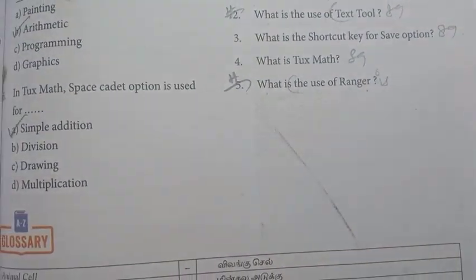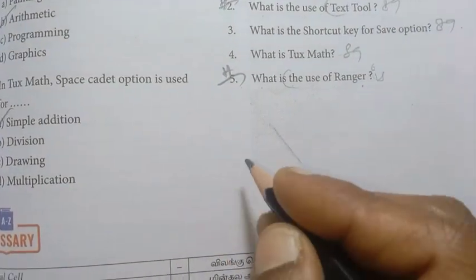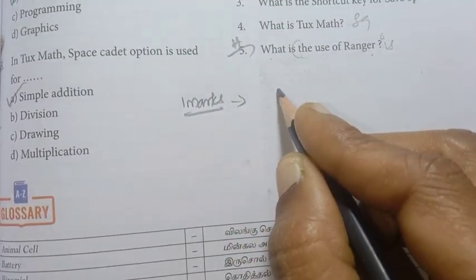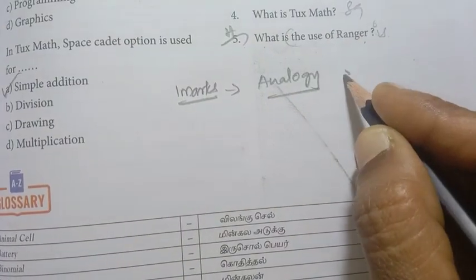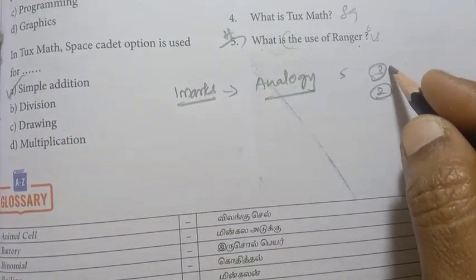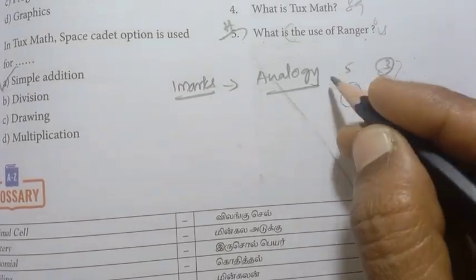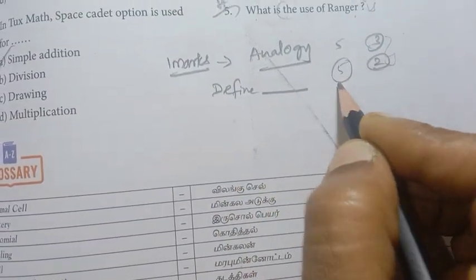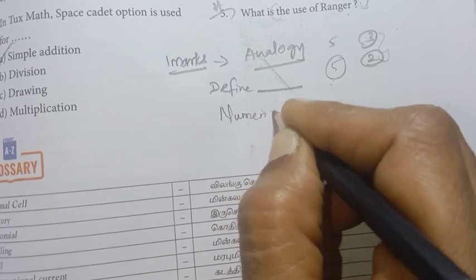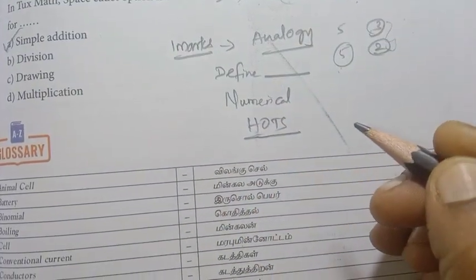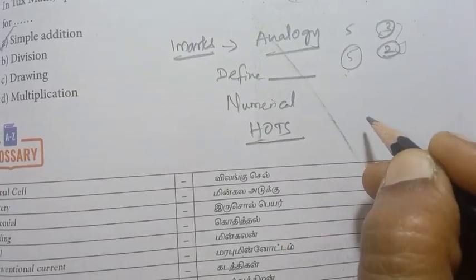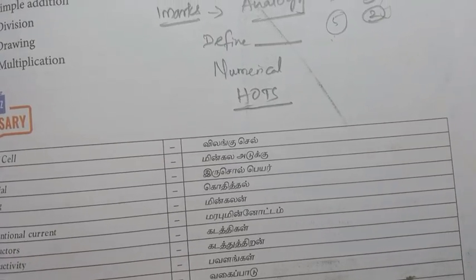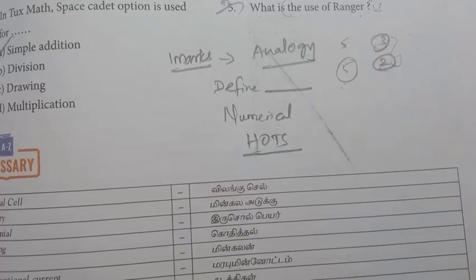For 7th standard Term 2 Science important questions, first concentrate on 1-mark questions — analogy, true or false (5 marks), and match (5 marks). That's why you first look at 1-mark questions. If you have any definition, that is compulsory. Also look at numerical problems and higher-order thinking skills questions. Prepare for it — if you start early, it will be easier for you daily. Wish you all the best. Thank you for your support. Thanks for watching.